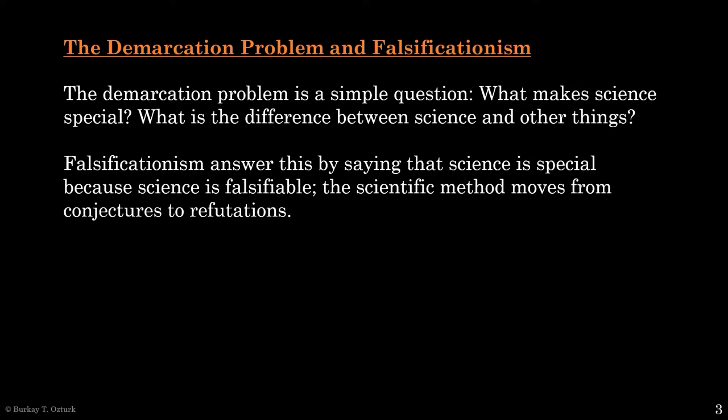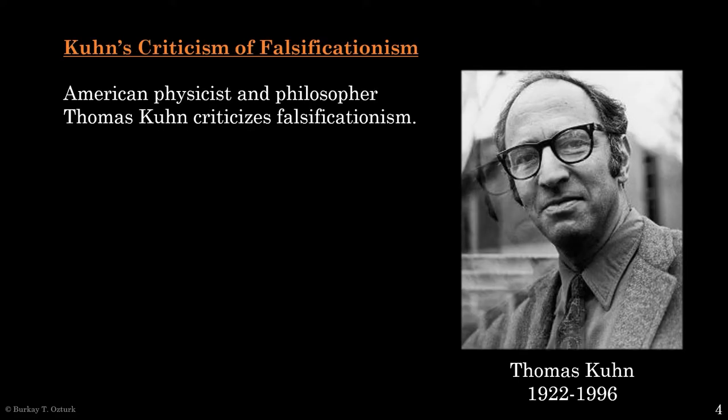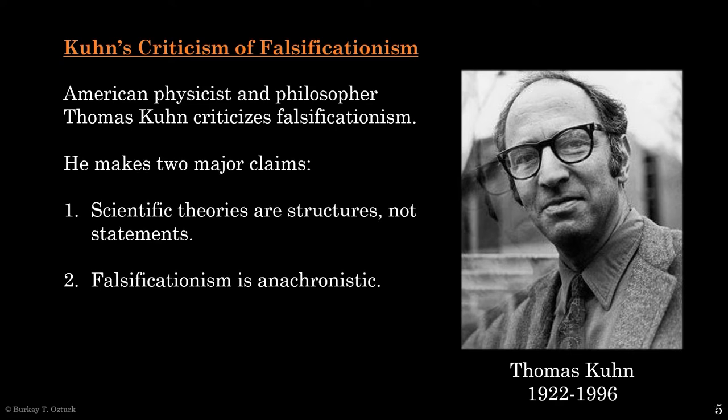The scientific method, according to falsificationism, moves from conjectures to refutations. Today we will examine the ideas of Thomas Kuhn, an American scientist and philosopher. Kuhn is very critical of falsificationism, and his criticism boils down to two major claims.